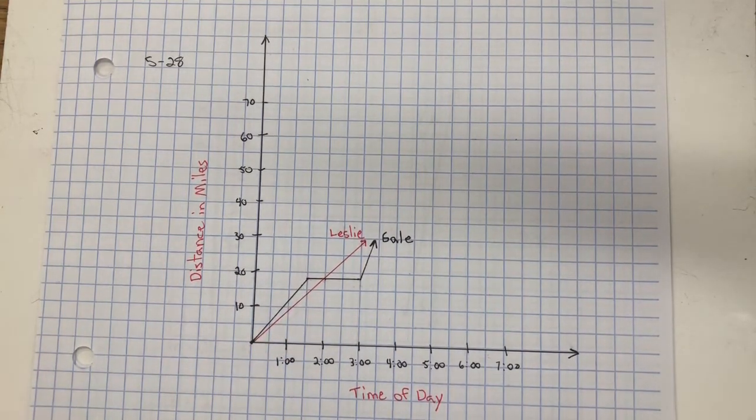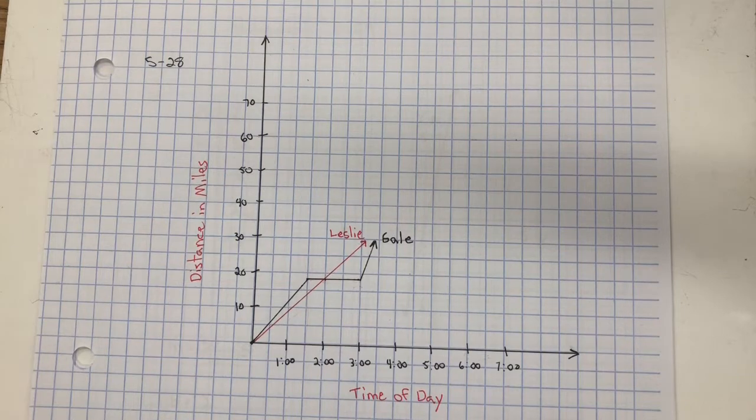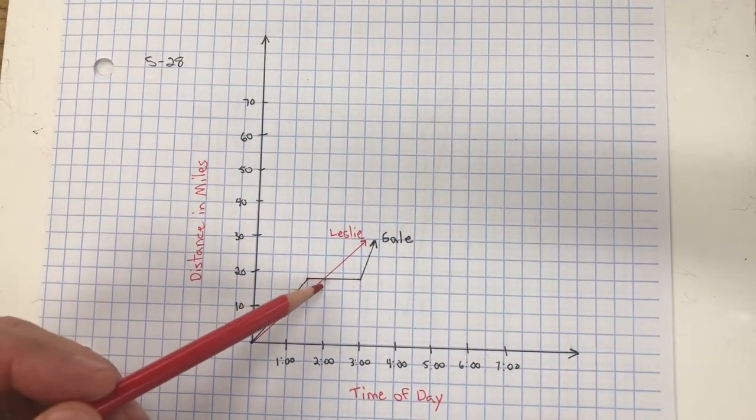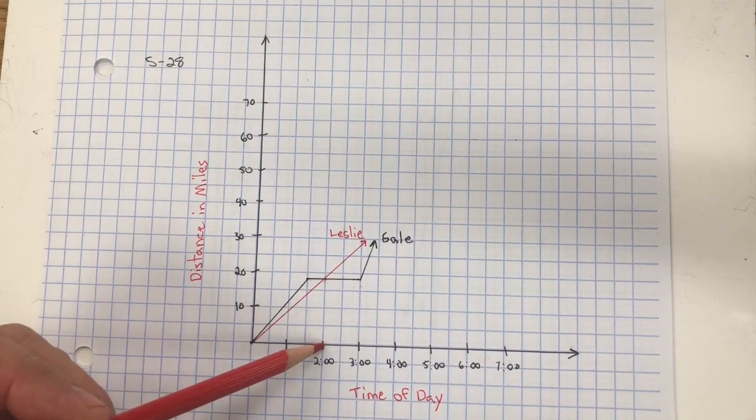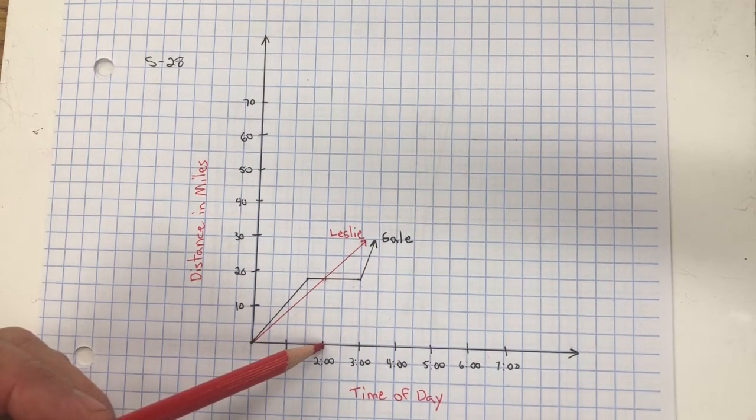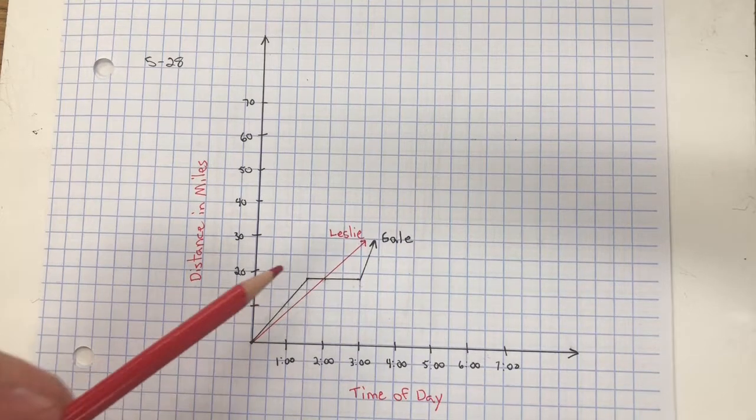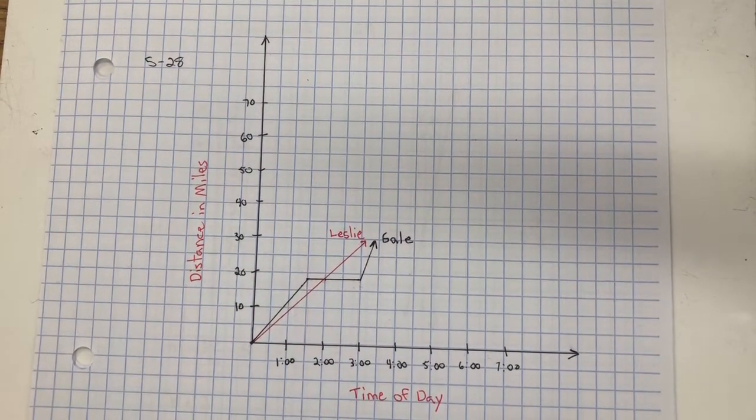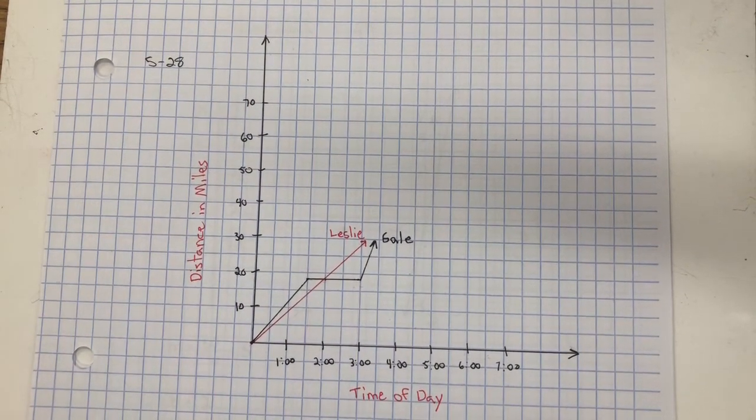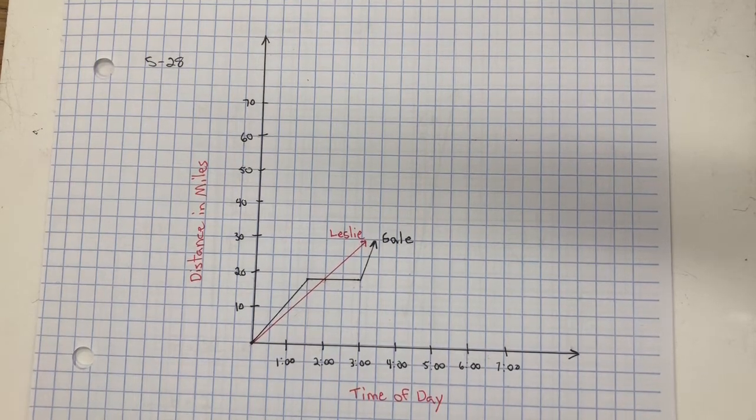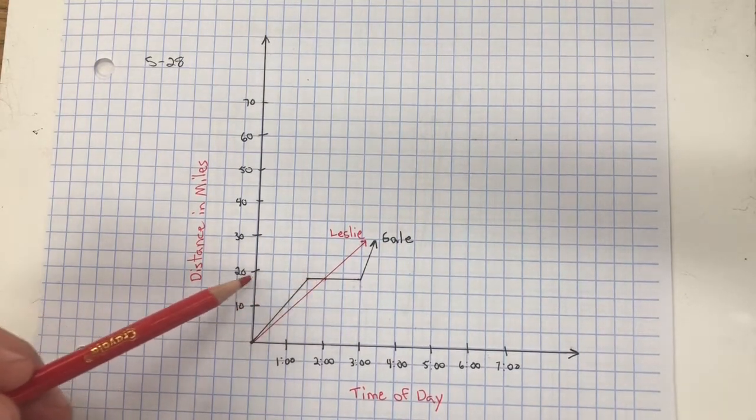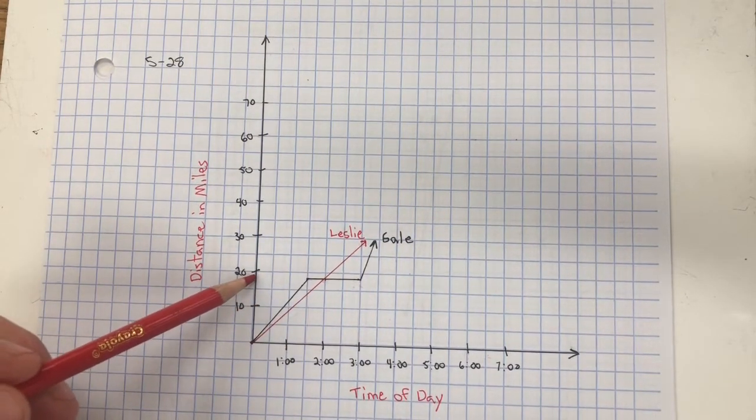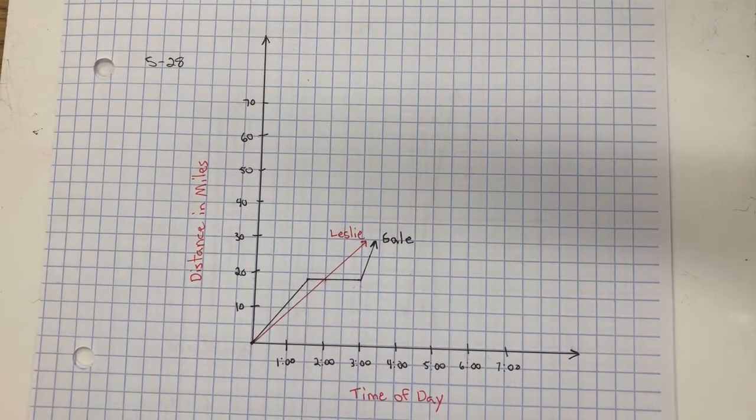In Part B, it asks approximately what time did Leslie pass Gail? So if we go down here, it is approximately 2 PM that Leslie and Gail are at the same place, and that's when she passes her. In Part C, about how far had Leslie traveled when she passed Gail? Well, here's the point of intersection, and we go to distance, and you can see that's approximately 18 miles.